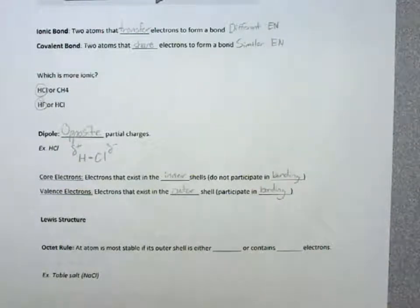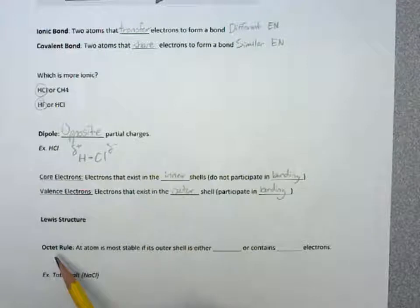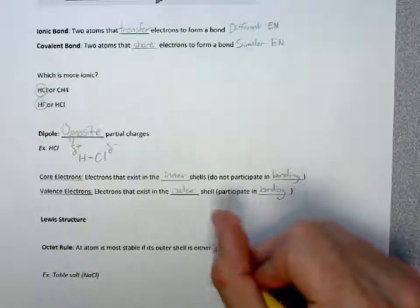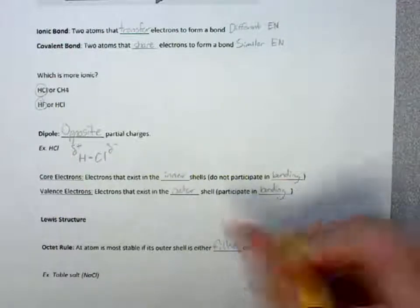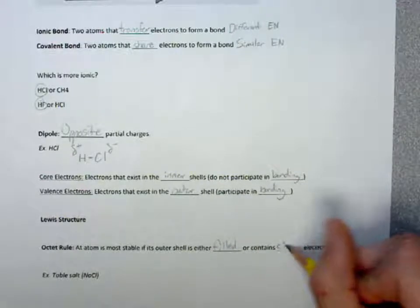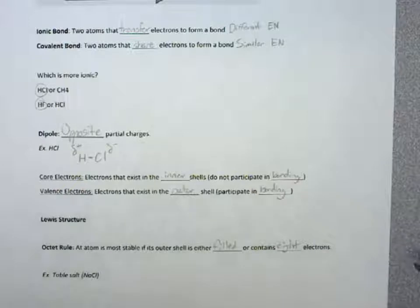Now we have a grasp on electronegativity and hybridization. We can look at Lewis structures. Lewis states that with the octet rule, an atom is most stable if its outer shell is either filled or contains 8 electrons. This is where these atoms are mimicking the noble gases where their octet are filled. That's why they are inert gases.